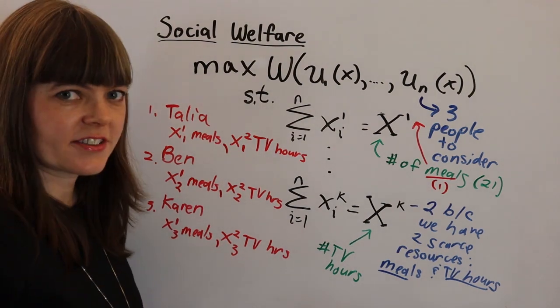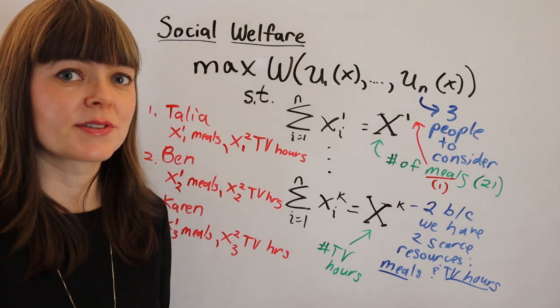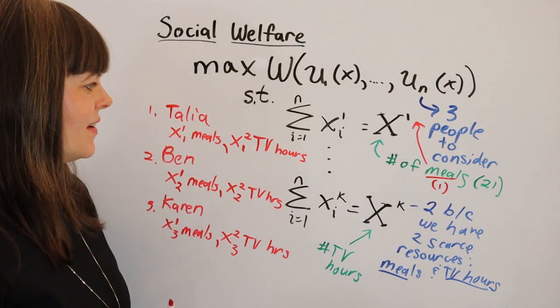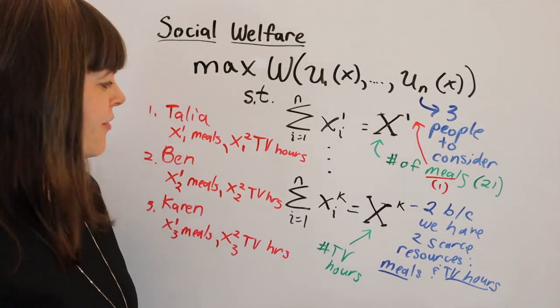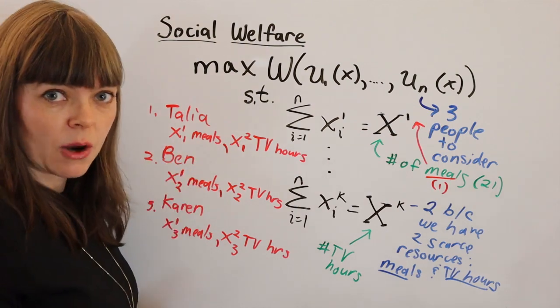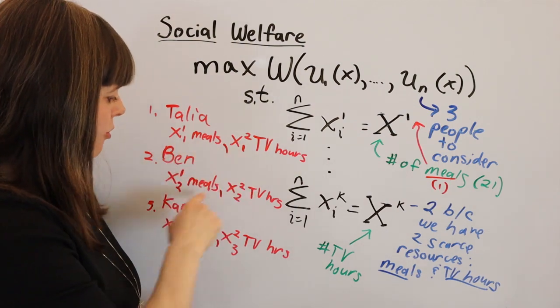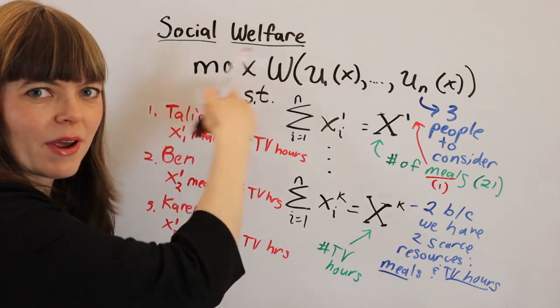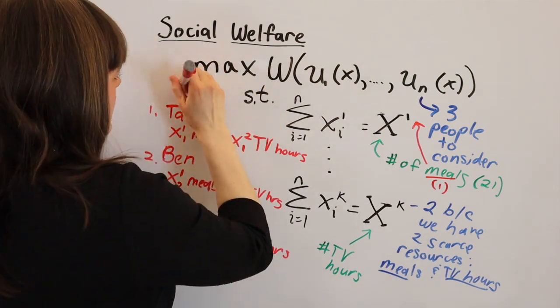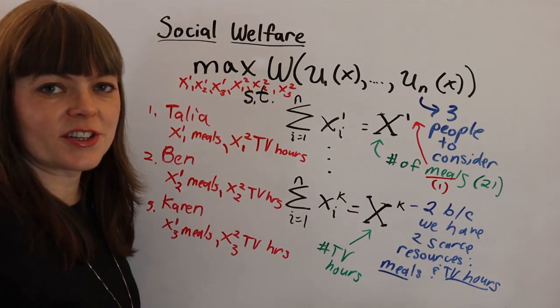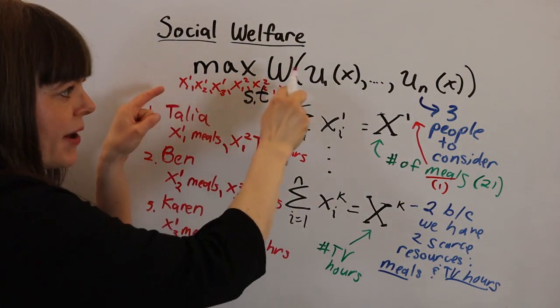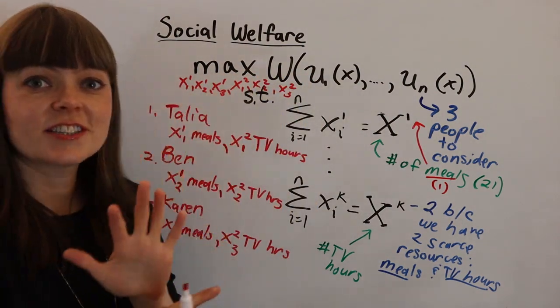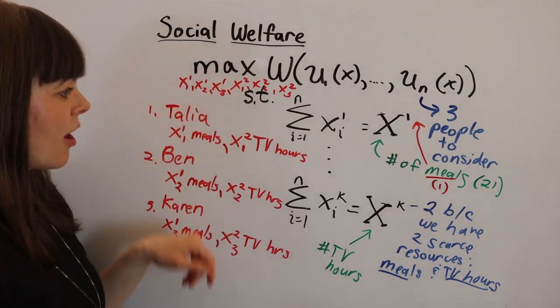In which case, we have to ask ourselves how many choice variables do we have in this problem? Well, we just listed our choice variables that we're deciding over and so let's count them up. One, two, three, four, five, six. We've got six different choice variables here. So let's actually write those out just to be clear. So I just moved all these choice variables up under our maximization sign just to remind you that all of these are the choice variables.